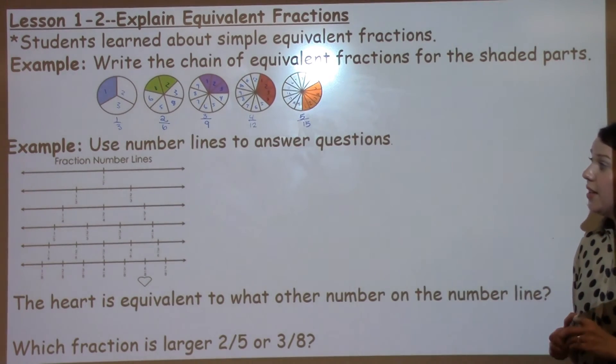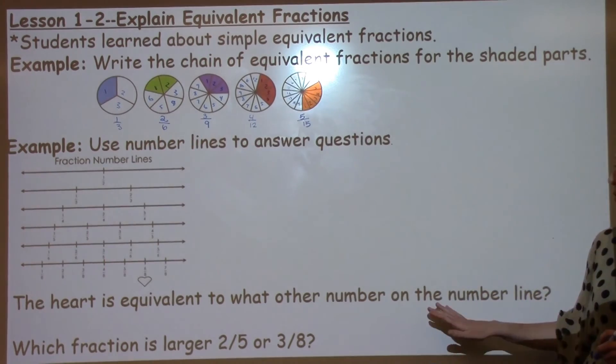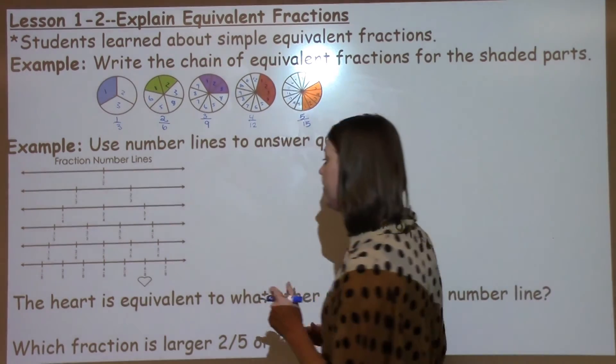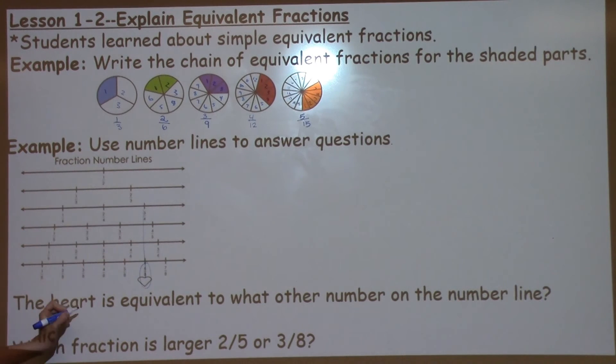Students also worked with using number lines today. Using this fraction number line, the first question we have is, what number is equivalent to the heart at 6 eighths? Looking at the 6 eighths on our number line, we need to go up or down looking on our fraction line. Looking as we go up, we see that 3 fourths is equivalent to 6 eighths. So those two numbers are the same.